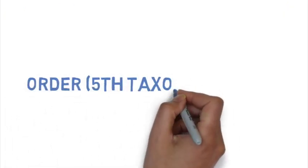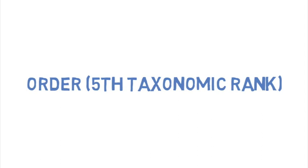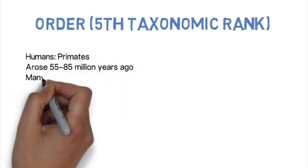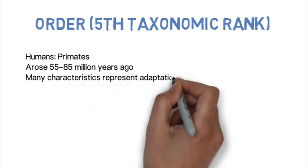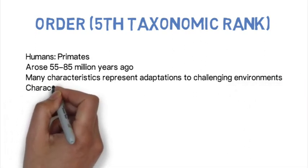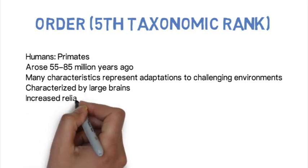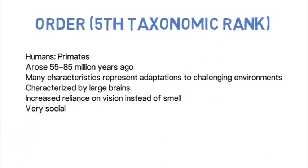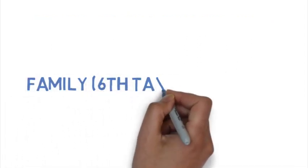The fifth taxonomic ranking is order. Humans belong to the order Primates, which arose around 55 to 85 million years ago. Primates developed important adaptations to challenging environments such as tropical forests, including increased visual acuity and larger brains — direct results of environmental challenges that drove natural selection. Unlike most mammals that rely strongly on smell, primates rely more on vision. Primates are also among the most social animals, forming groups and interconnected relationships.